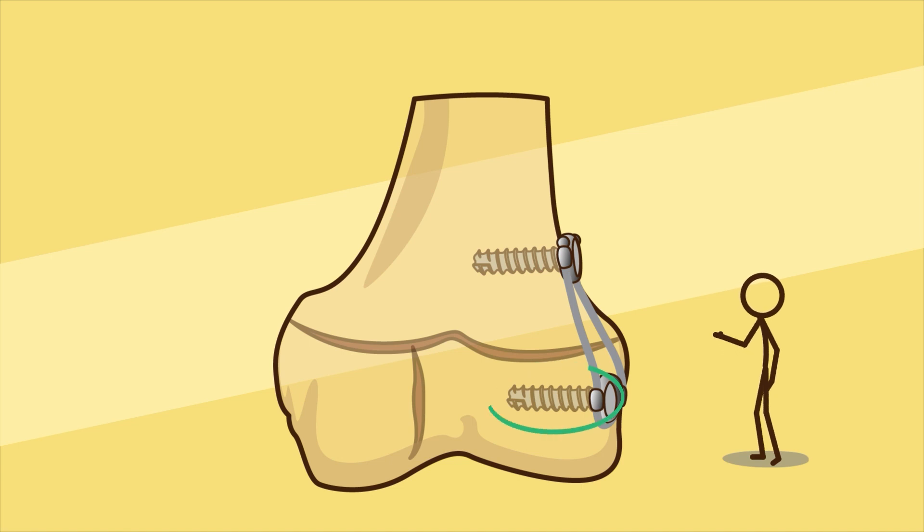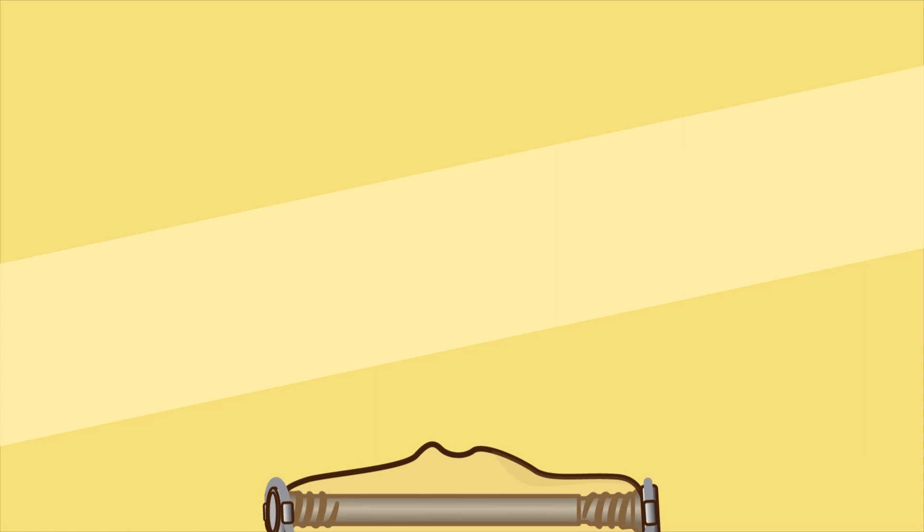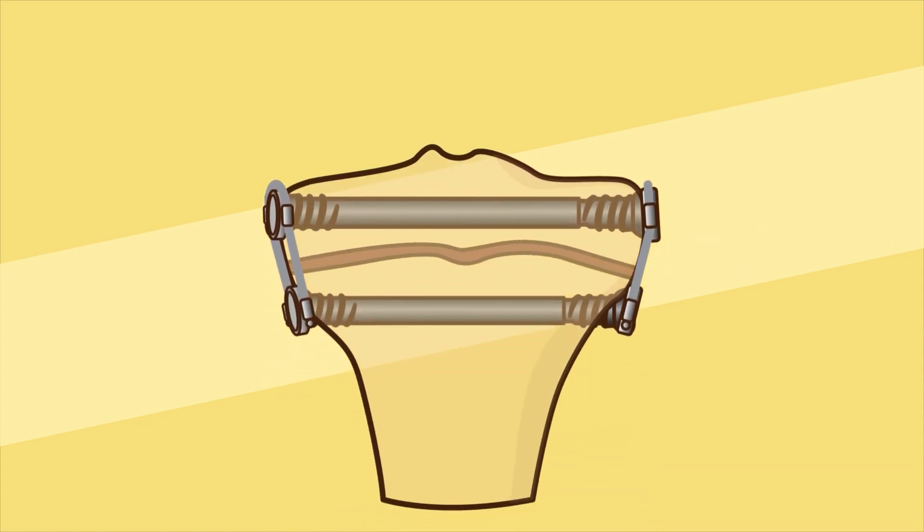Temporary epiphysiodesis principle: This procedure can also be referred to as temporary growth arrest. The sliding posts are designed to create a cortex to cortex tethering system to constrain growth uniformly and reliably, which avoids asymmetrical growth seen in conventional tension band plating methods.